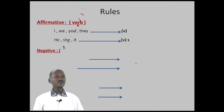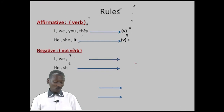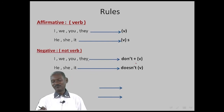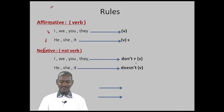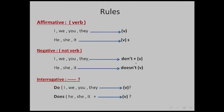For the negative rule: I, we, you, they + don't + verb; he, she, it + doesn't + verb. For the interrogative rule: we put do before I, we, you, they + verb; or we put does before he, she, it + verb.